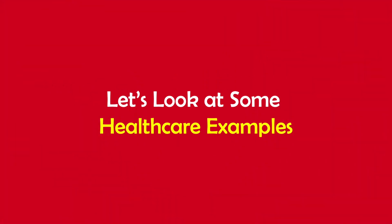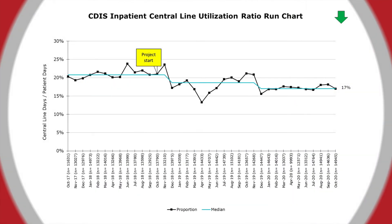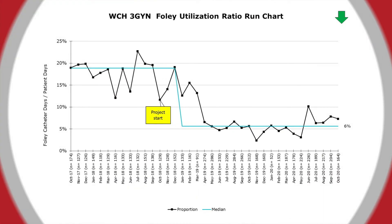Now let's take a look at some examples of run charts used in projects here at UC Health. This chart displays the use of central lines among patients admitted to the hospital. The team wants to better understand the impact of their project on reducing central line use. The baseline was a stable system with common cause variation. Since the start of the project, there have been two shifts in the right direction. This chart shows the utilization of urinary Foley catheters among patients in a hospital unit. The baseline median was 18% with wide-range common cause variation. Since the project started, the system has shifted in the desirable direction with narrow variation.